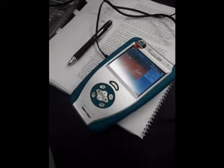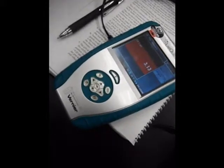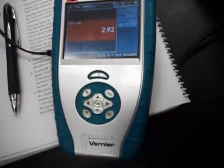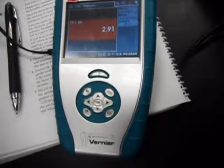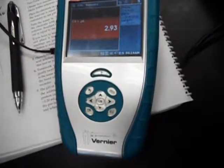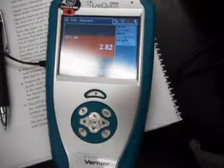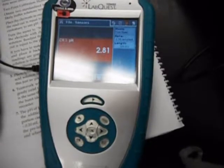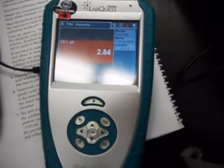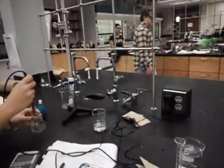This is a titration between a strong base and a weak acid. The pH should go up as the base is put into the weak acid. Once the pH stabilizes, you want to record that into your notebook.